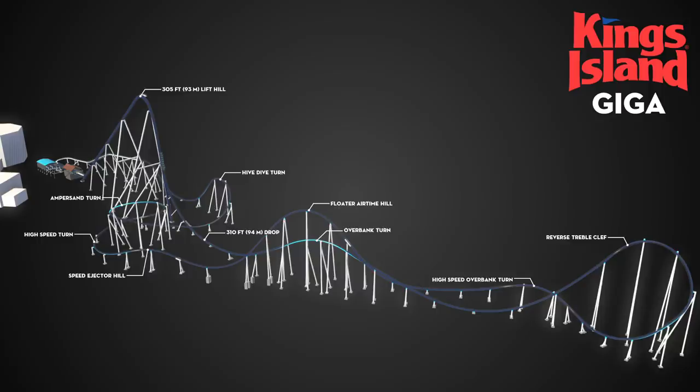But the location of the brake run, turn into the station, transfer track, station, lift hill, and drop is pretty accurate compared to what the blueprints show. There have been blueprints that came forward.